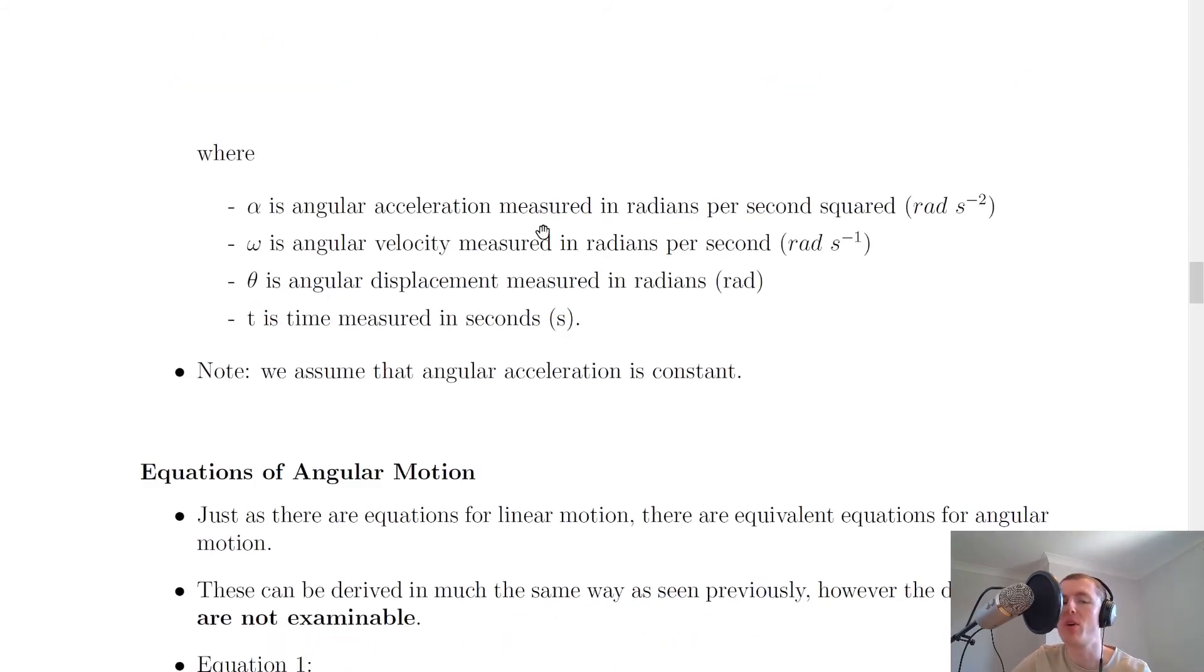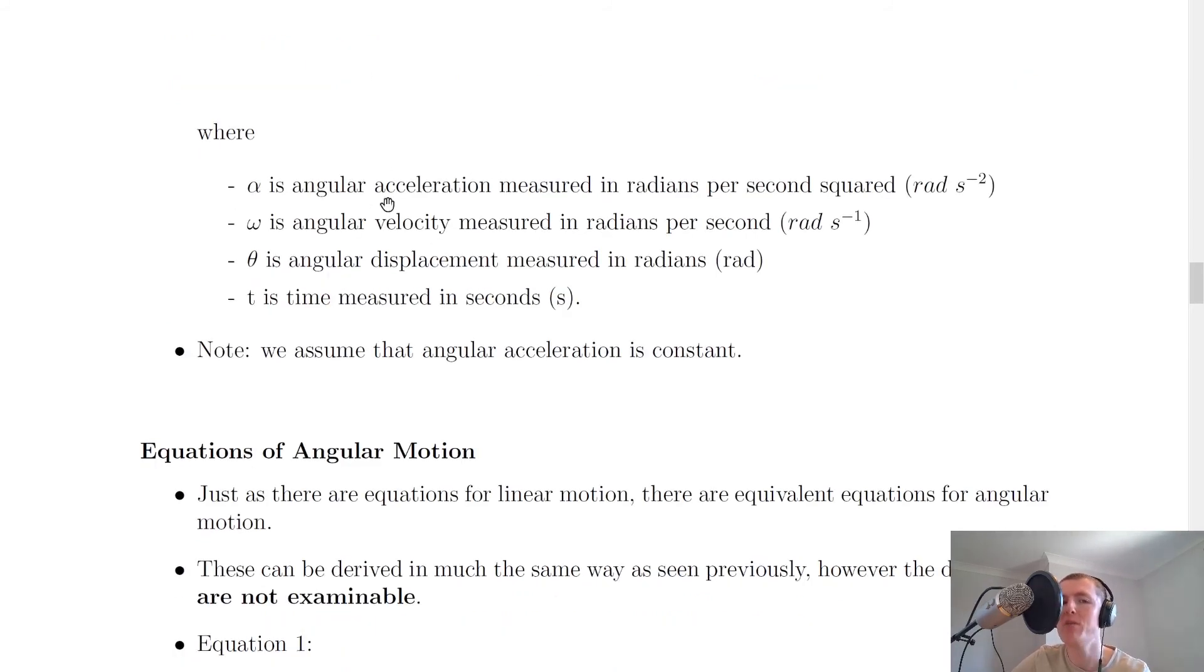Here are what each of the quantities mean and their units. Alpha is angular acceleration measured in radians per second squared. Again we can say rad for short, so rad s⁻². Omega is angular velocity measured in radians per second. Theta is angular displacement measured in radians, and t is time measured in seconds.